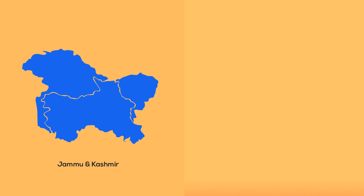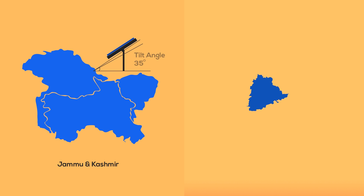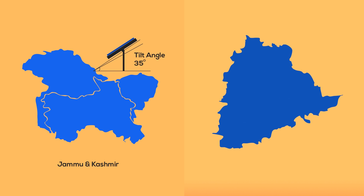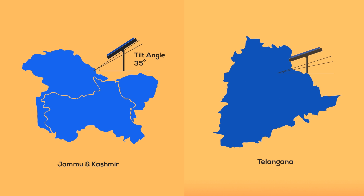For example, if you are living in J&K, you can install solar panels at 35 degrees. Similarly, in Telangana, you should install them at either 12 degrees or 18 degrees.